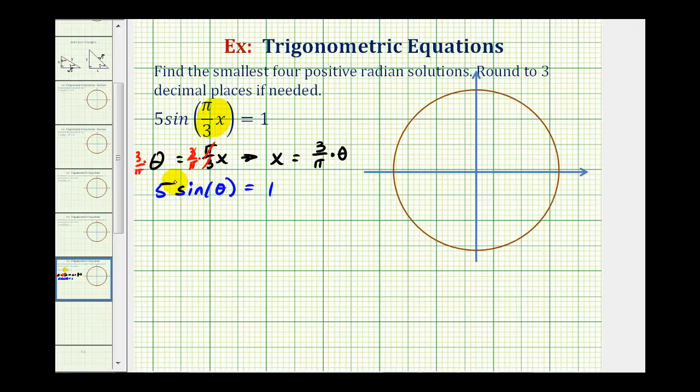So to solve this for θ, we'll divide both sides by five. So we have sinθ = 1/5.